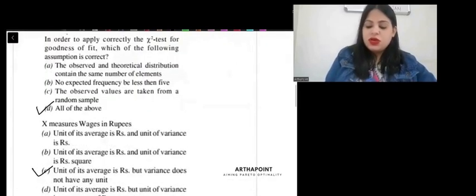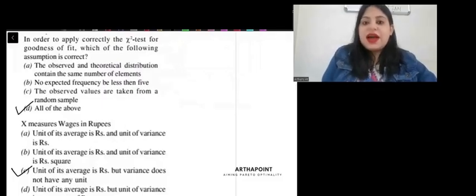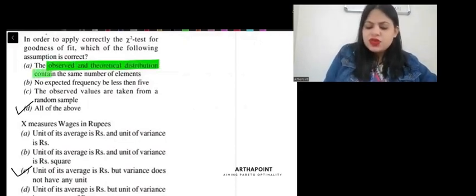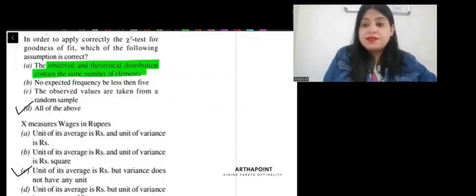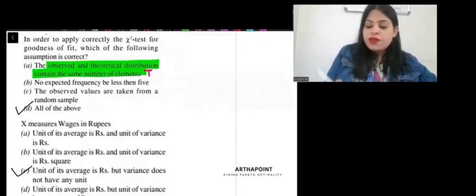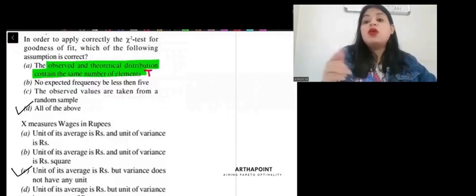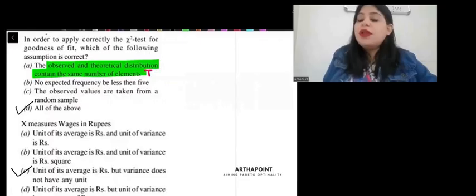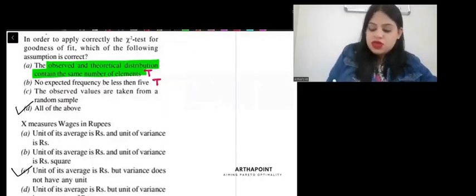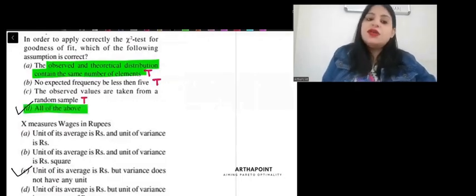Come to the next question. In order to apply correctly the chi-square for goodness of fit, which of the following assumption is correct? The observed and theoretical distribution contain the same number of elements? Yes. Observed should be equal to actual. So, this is true. No expected frequency can be less than 5. Yes, you cannot work if it is less than 5 because then you will have a problem with your degrees of freedom. So, this is also true. Observed values are taken from random sample. Yes, there is a randomized method. This is also true. So, all the above options are true.